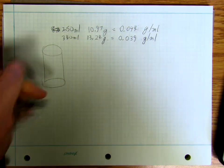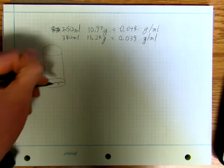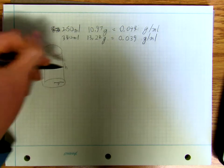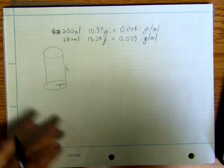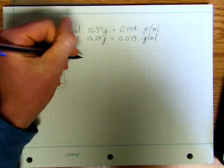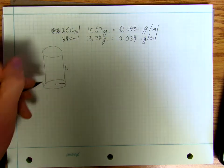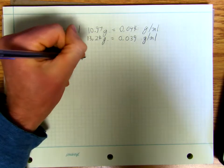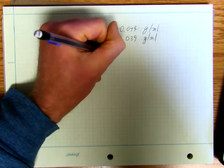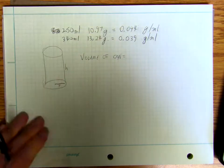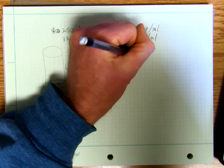The cylinder has a radius and it's got a height. What I'm going to do is say that the volume of the can is equal to pi r squared h.